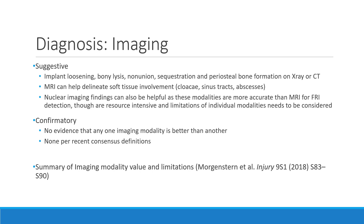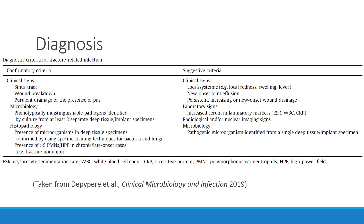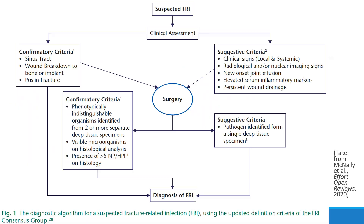This summary table shows the diagnostic criteria for FRI, with confirmatory signs and symptoms as well as laboratory and histology findings on the left, and suggestive signs, laboratory findings, and imaging on the right. The summative diagnostic algorithm indicates that confirmatory criteria are required for a definitive FRI diagnosis, while suggestive criteria should increase clinical suspicion but are not adequate on their own.